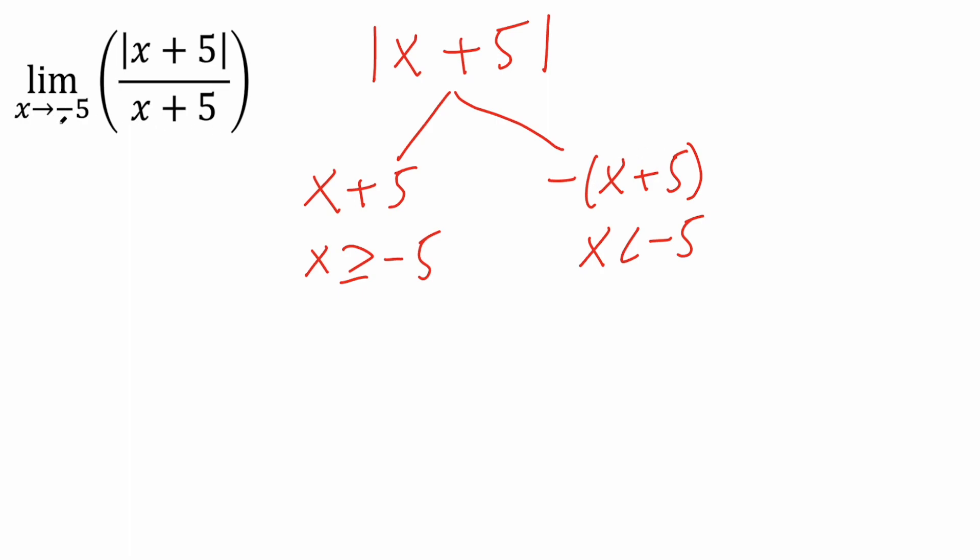Now in our problem, it says x is approaching negative 5. So we have to actually analyze two forms. We have to analyze it to the left of negative 5, and also to the right of negative 5. And so we have to use both of them.